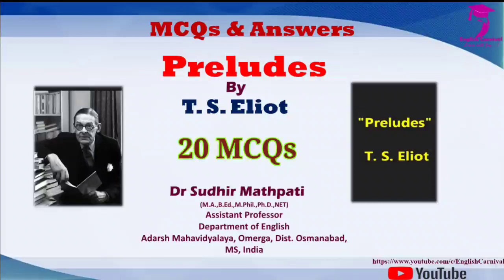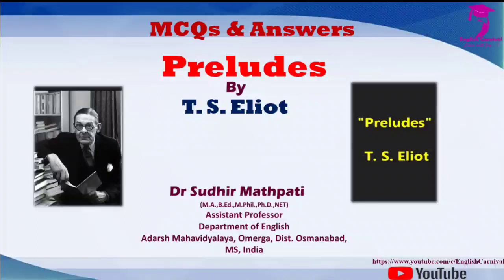Today we are going to explore around 20 multiple choice questions based on Eliot's popular literary contribution called Preludes. Preludes is a comprehensive collection of four poems written by T.S. Eliot and it is one of his most significant literary contributions. It had been composed between 1908 to 1912 when he was just in his early twenties. Preludes is about drudgery, rest and isolation of modern urban life. This poem is set in an unnamed city which is quite grimy and dirty, and people perform unthinkingly their daily routines. So friends, without wasting much time, let's begin and explore some multiple choice questions.